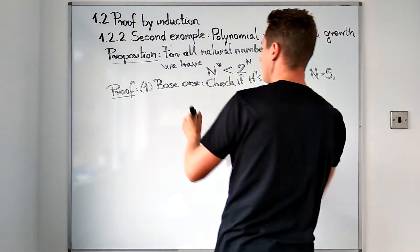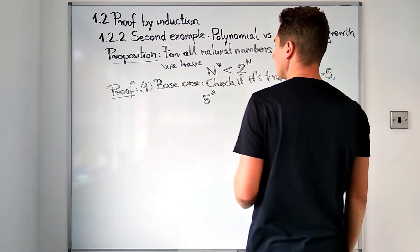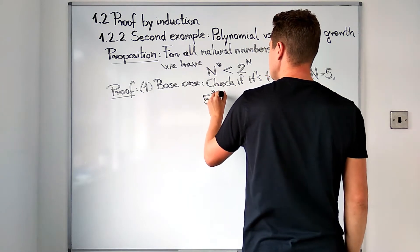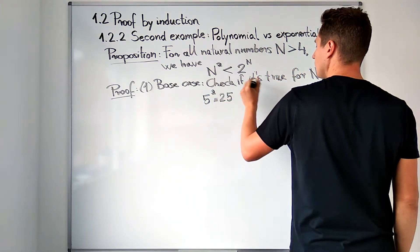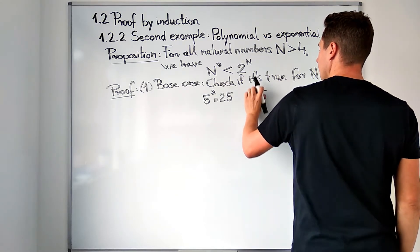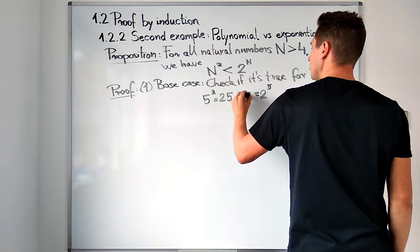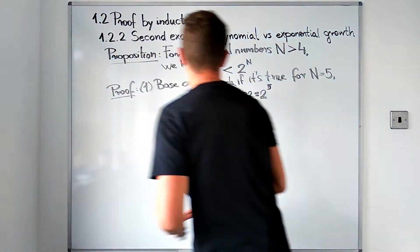In this case, this is n equals 5. For n equals 5, we have 5 squared on the left-hand side of the claimed inequality, which is 25. On the right-hand side, we have 2 to the fifth power, which is 32, and indeed that is greater than 25.